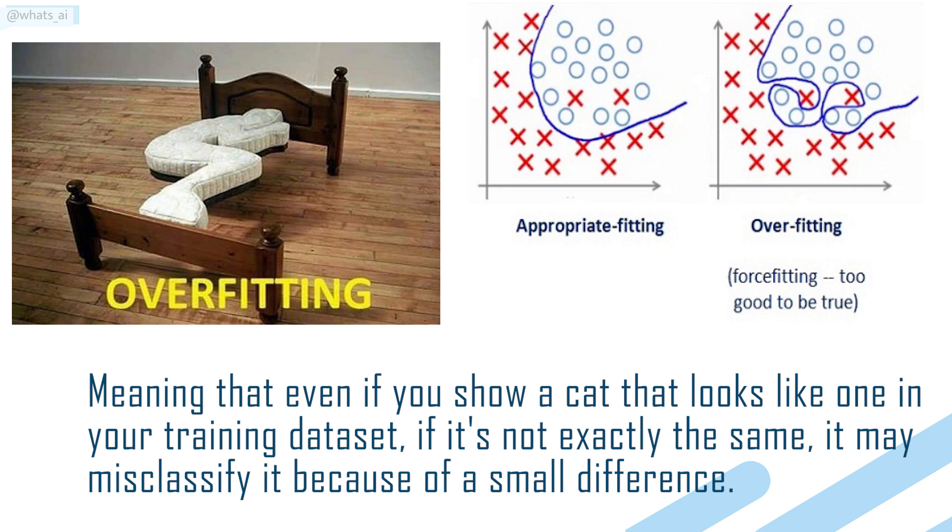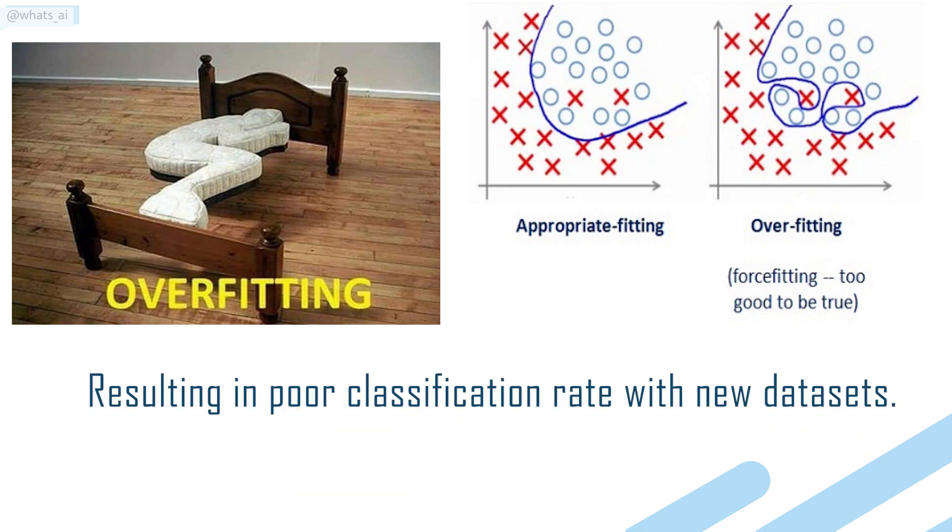Meaning that even if you show a cat that looks like one in your training dataset, if it's not exactly the same, it may misclassify it because of a small difference, resulting in a poor classification rate with new datasets.